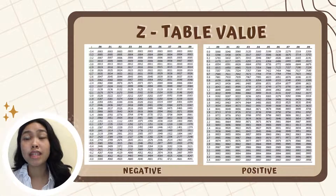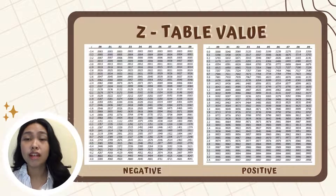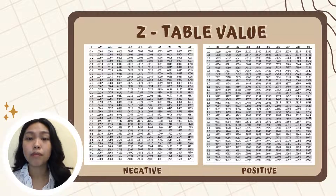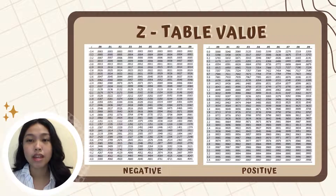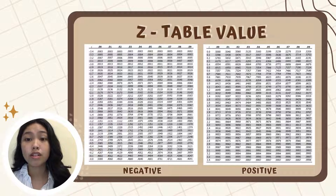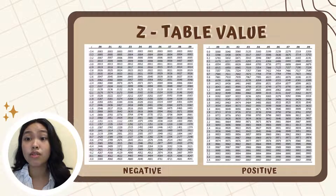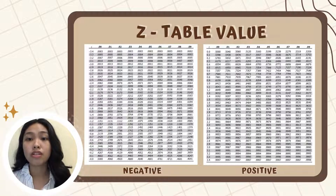Ngayon, ito na yung Z-table value na binanggit ko kanina. Ito yung gagamitin natin as reference para makuha natin yung area. Sa left is yung Z-values kapag negative yung result ng Z-score, and yung sa right naman is kapag positive.